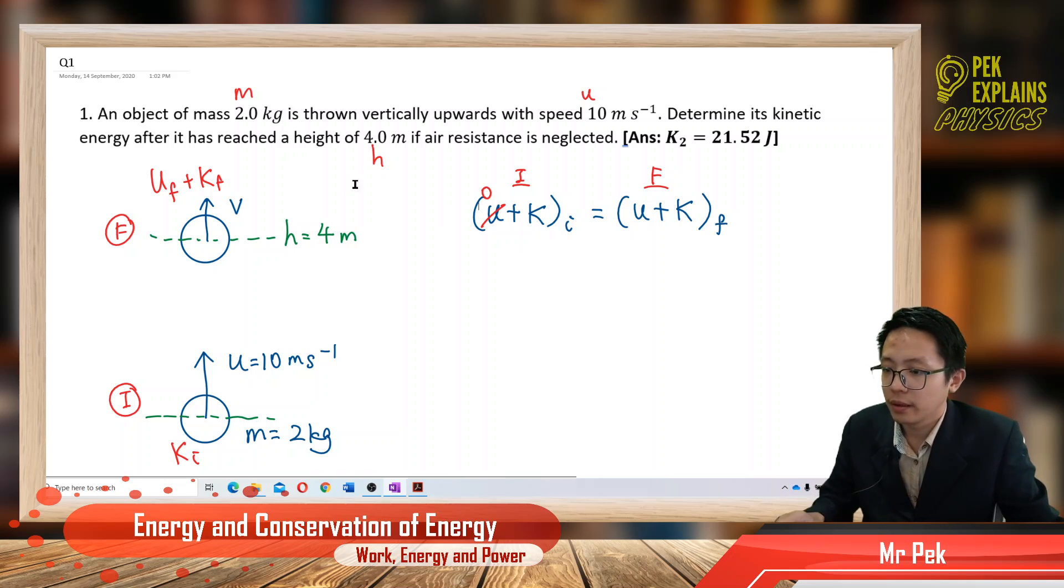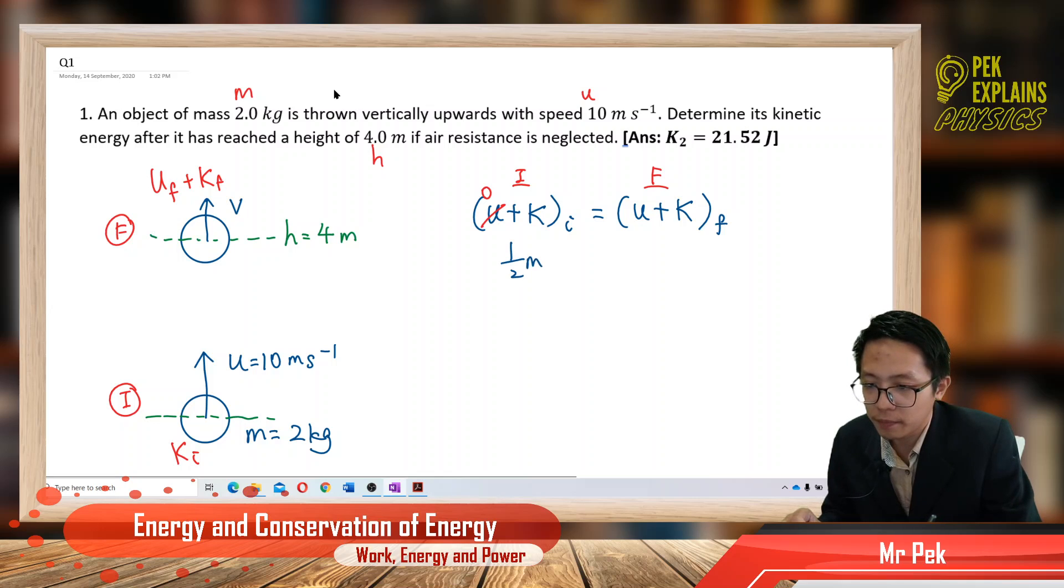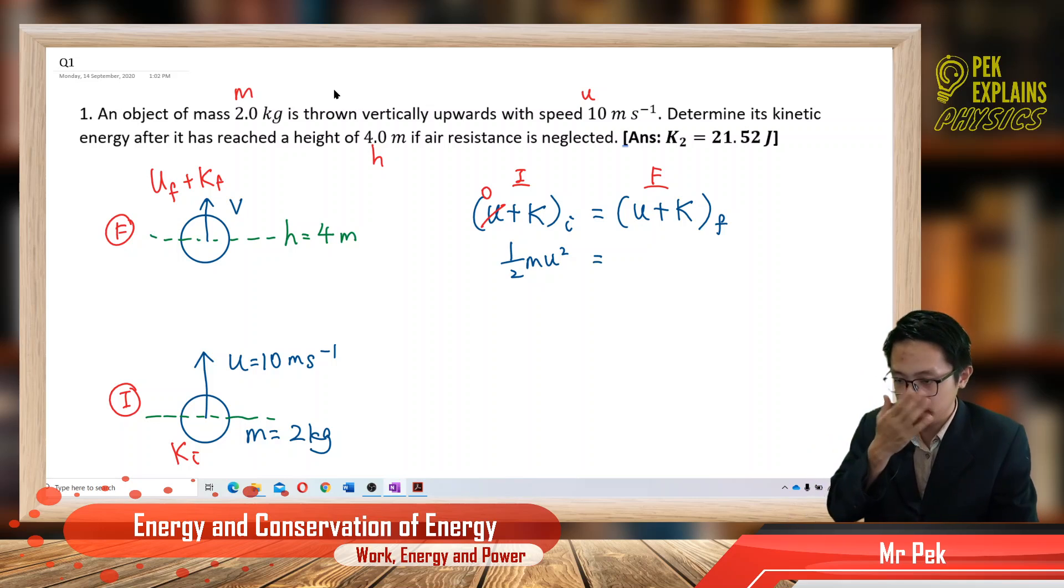Half mu square initially has kinetic energy. And finally, it has potential energy and kinetic.